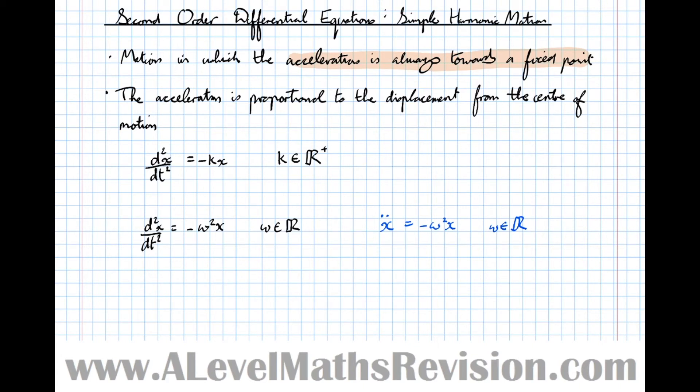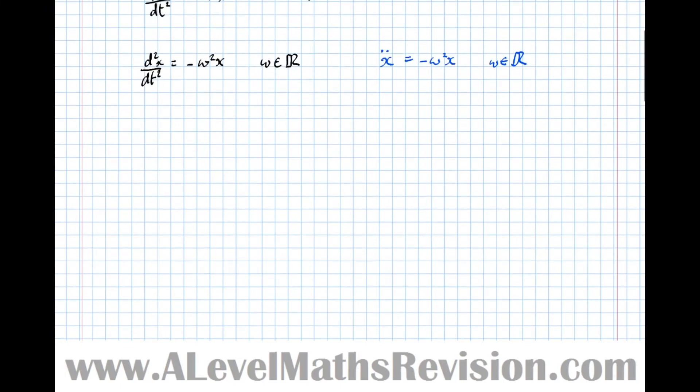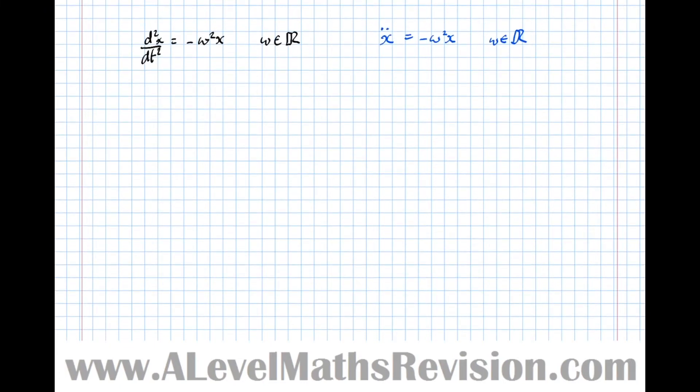So to try and get a picture of what simple harmonic motion looks like, we're now going to solve this differential equation. So we've got d²x/dt² equals minus omega squared x. Let's rearrange to the format that we're used to seeing a second order differential equation in: d²x/dt² plus omega squared x equals zero.